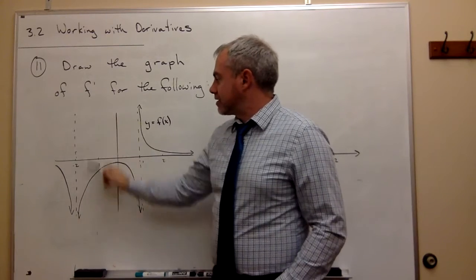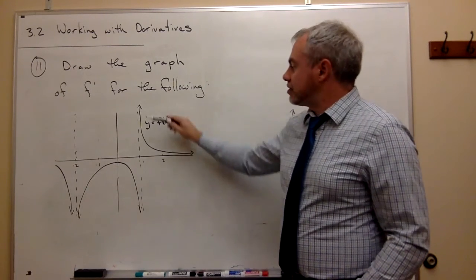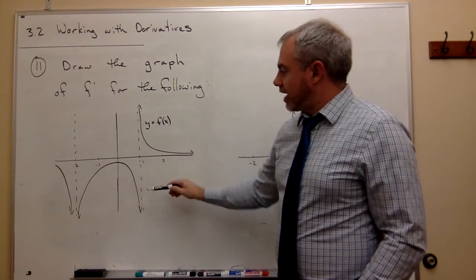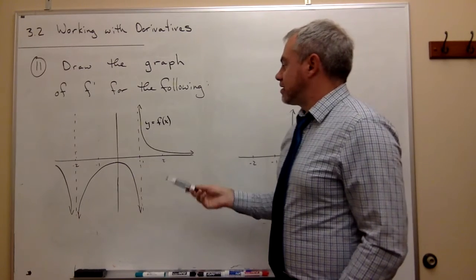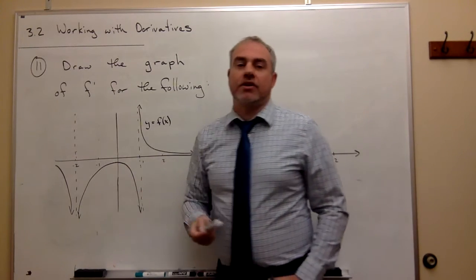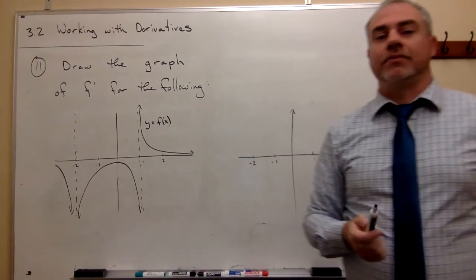We have several asymptotes. We have an asymptote at x equals minus 2. We have an asymptote at x equals 1. And then some behavior where things are heading off to positive or negative infinity in between.